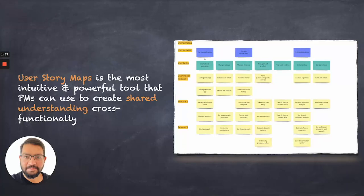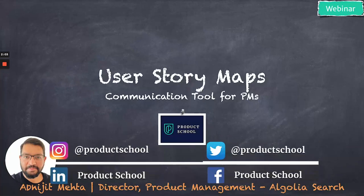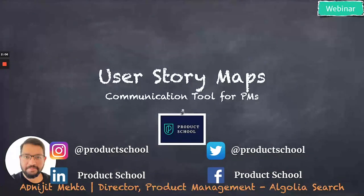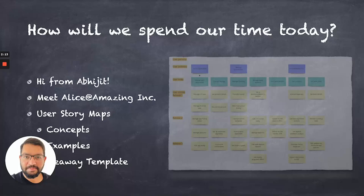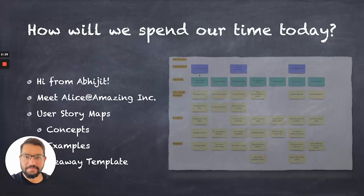User Story Maps is the most intuitive and powerful tool that product managers can use to create shared understanding cross-functionally. That is what we are here today to talk about. We will talk about how and when you could use User Story Maps as a communication tool. Let's quickly look at the structure today. I'd love to introduce myself, and I will also introduce you to Alice, who is a product manager at Amazing Inc. We'll talk about user story maps, look at the concepts, look at some examples, and I have a takeaway template if that becomes interesting to anyone.